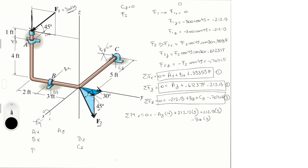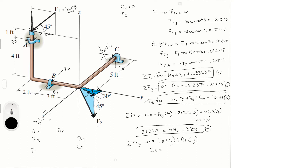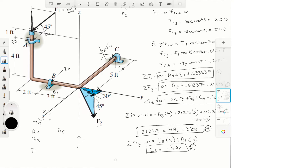Simplifying gives: 2121.3 equals 4Ay plus 3Bz — Equation 4. Sum of moments in y equals zero: Cz times 5 plus Ax times 4 equals zero, so Cz equals minus 0.8 Ax — Equation 5.